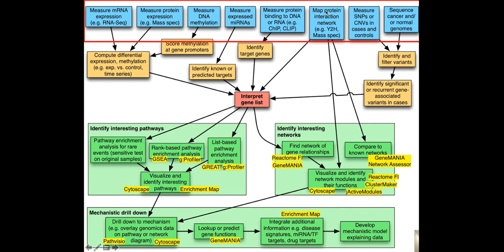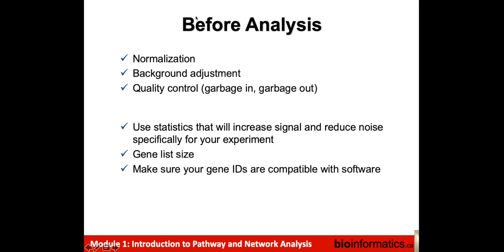Mapping protein interactions directly identifies a set of genes that interacts with a given protein, and looking at mutations from whole genome sequencing or exome sequencing identifies a set of variants which can be linked to genes. Before analysis, when we have data from any one of these methods, we need to be aware that we need to normalize, do a proper background adjustment, and proper quality control to avoid giving too much noise to the pathway analysis methods. We need to consider how many genes result from this — we don't want to generate a single list filled with the entire genome. We also need to make sure that the gene identifiers are compatible with the software we're using.